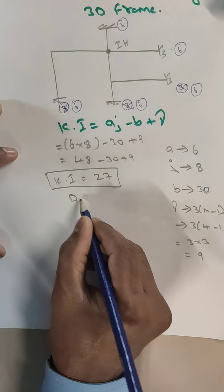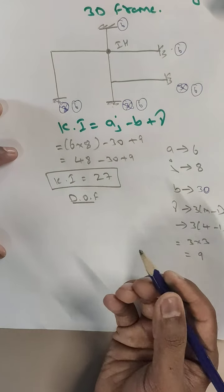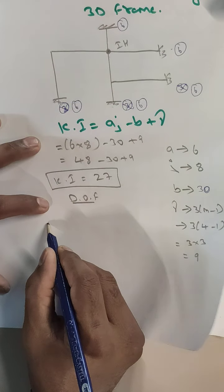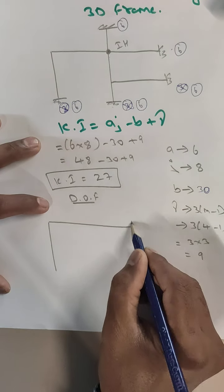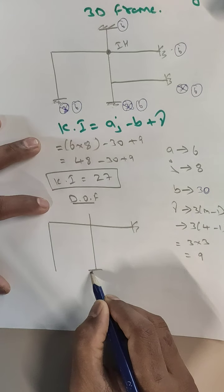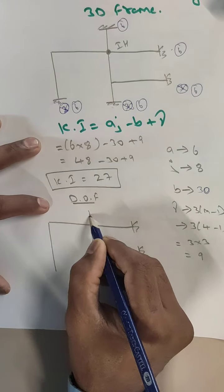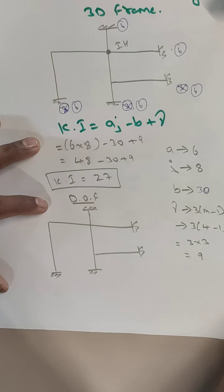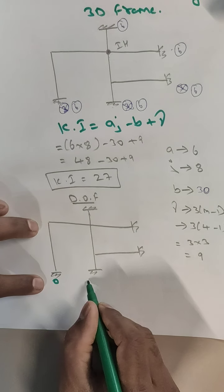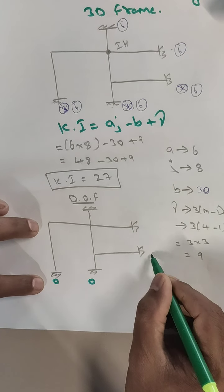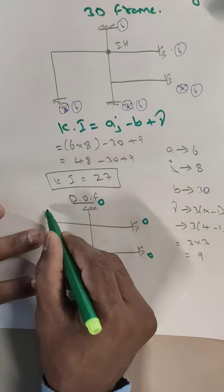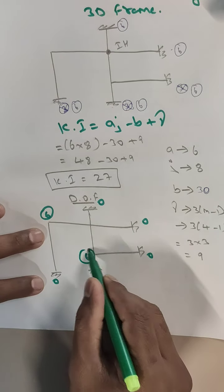Now let us verify this by drawing the diagram and identifying where the degrees of freedom are located. Kinematic indeterminacy is essentially the total degrees of freedom. At the support joints, the degrees of freedom are equal to 0 — each of the four base supports contributes zero degrees of freedom.